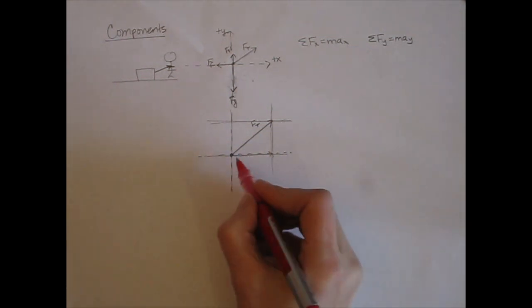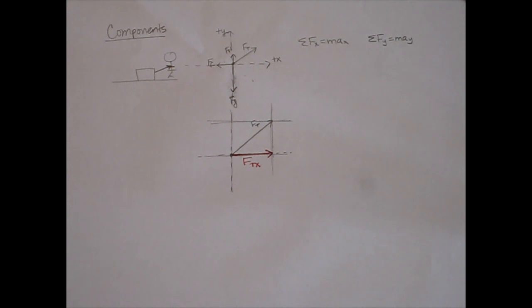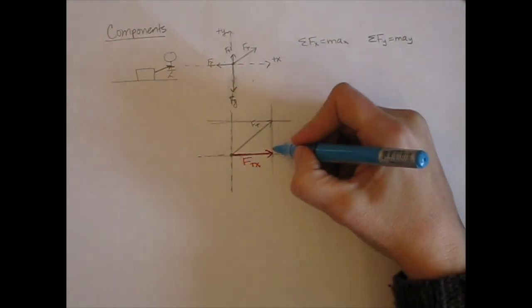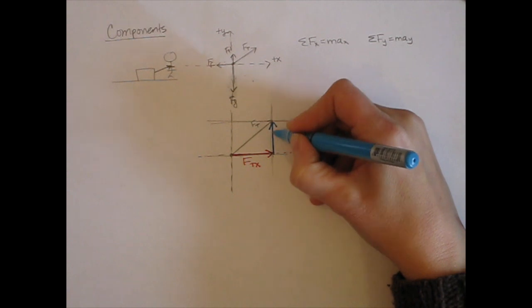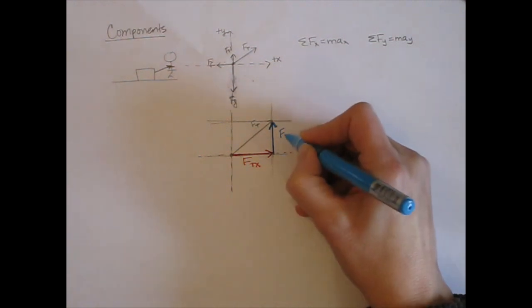And it's directed to the right. So here is my x component. And I would call that force of tension x. Well, how much of this tension force is pulling vertically? That's going to be this part, from here to here. So that component looks like this. And I would call that Fty.